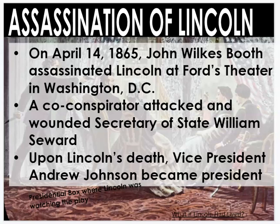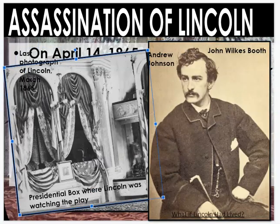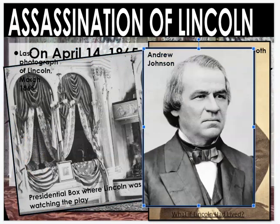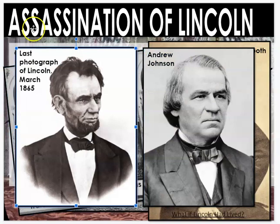Whenever a president dies or is forced to leave office or willingly leaves office during their term, the vice president takes over. Abraham Lincoln's vice president was a guy named Andrew Johnson. That's John Wilkes Booth, this is where the theater where he was shot, and this is Andrew Johnson on the right side here. He was Lincoln's vice president and he takes over as president.